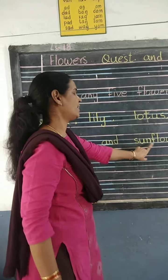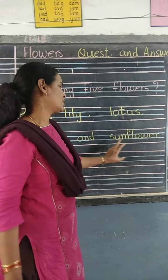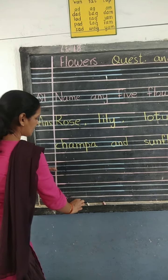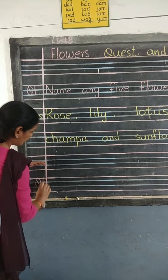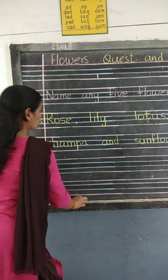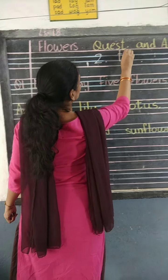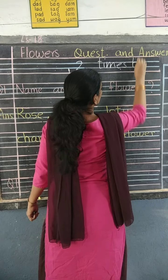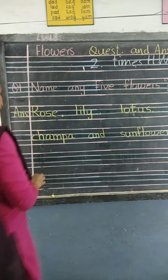S-U-N — sun. F-L-O-W-E-R — flower. Sunflower. Again we'll write the second time. Now question number one again — same thing we are writing. So two times homework. Here I'm writing: T-I-M-E-S — times — H-W — homework. So again we are writing.